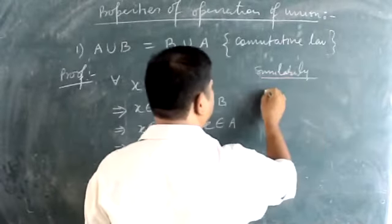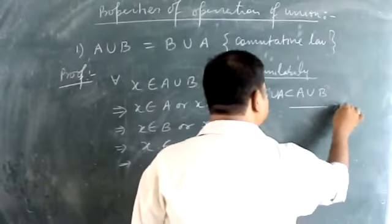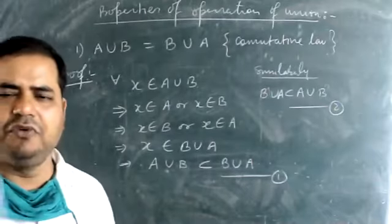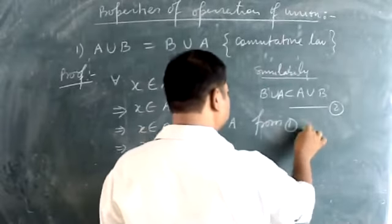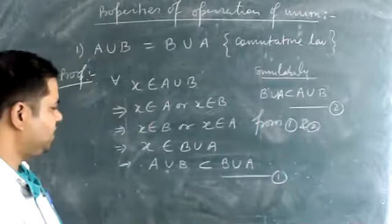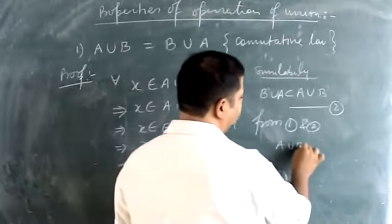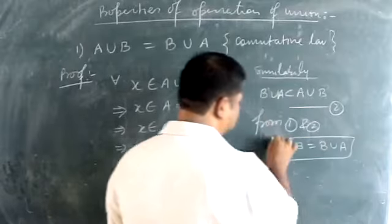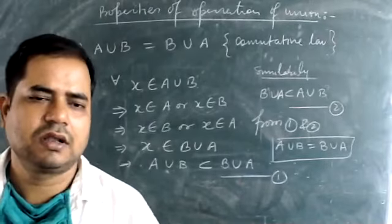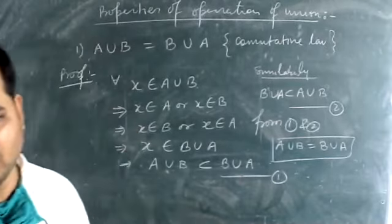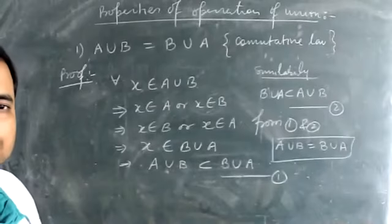From equations (1) and (2), both sets are subsets of each other, so A union B equals B union A. This shows that union holds the commutative law. Note it down.